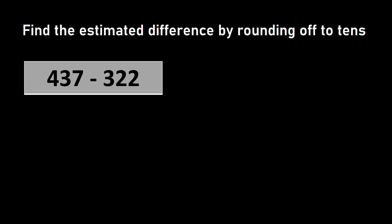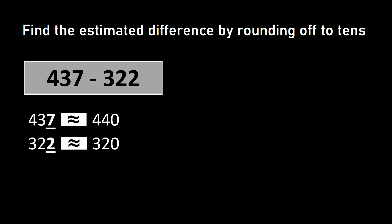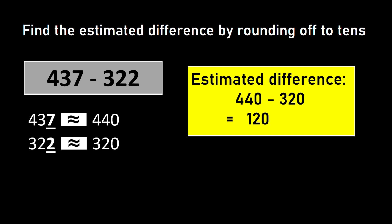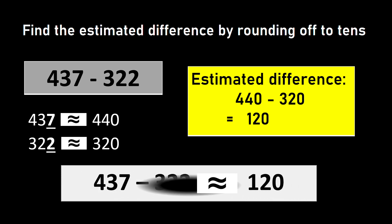Next I have 437 minus 322. In 437, I have 7 in ones place, so it will be rounded up as 440. And 322 will be rounded down as 320. So 440 minus 320 is equal to 120. Hence I say 437 minus 322 is approximately equal to 120.